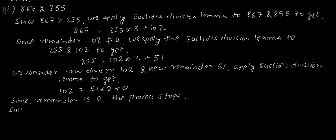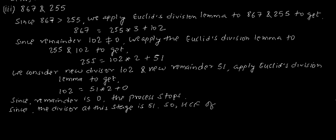Since the divisor at this stage is 51, the HCF of 867 and 255 is 51, which is our answer.